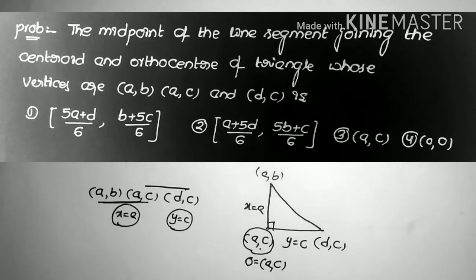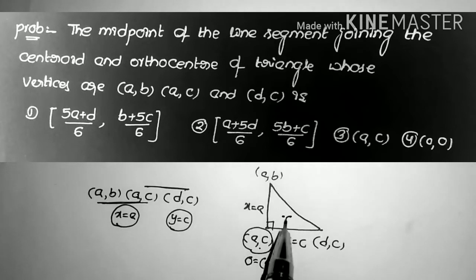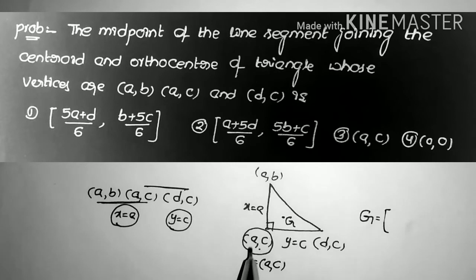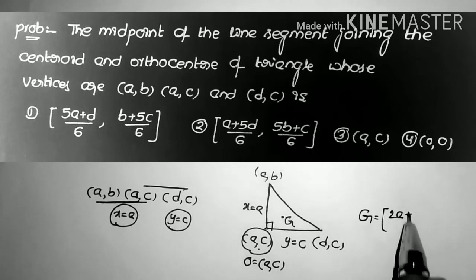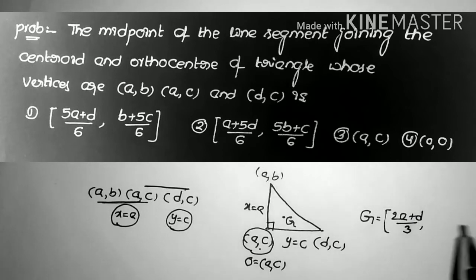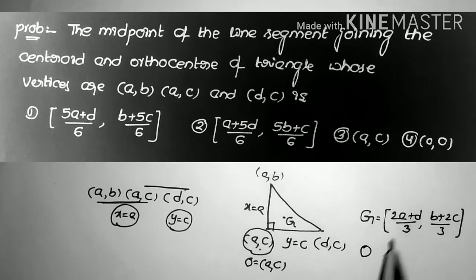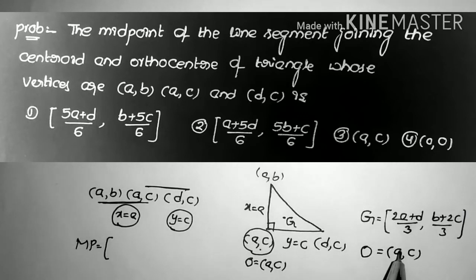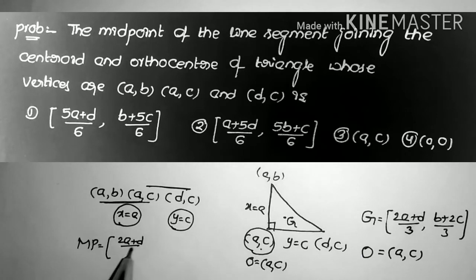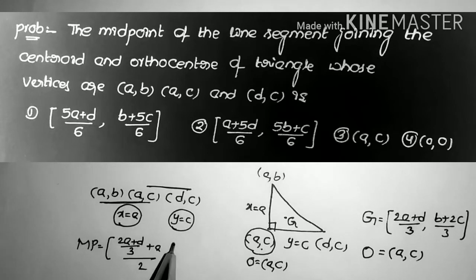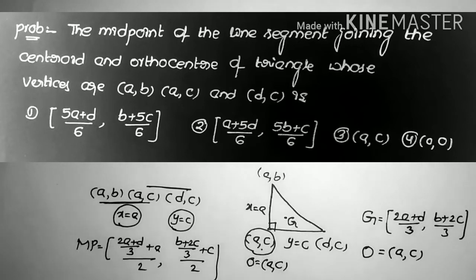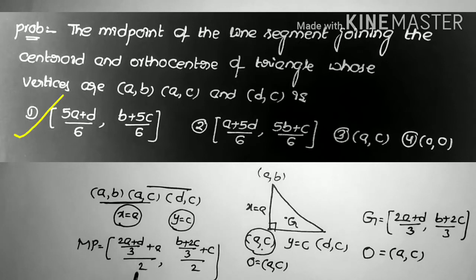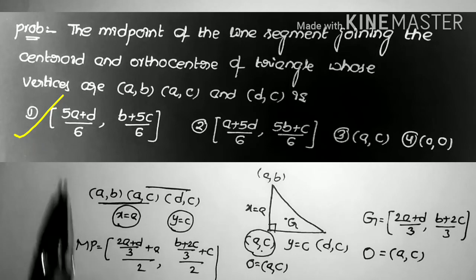The question asks for the midpoint of the centroid and orthocenter. Centroid G = ((a + a + d)/3, (b + c + c)/3) = ((2a + d)/3, (b + 2c)/3). Orthocenter = (a, c). The midpoint x-coordinate = ((2a+d)/3 + a)/2 = (5a + d)/6. So the x-coordinate is (5a + d)/6, which is the first option.